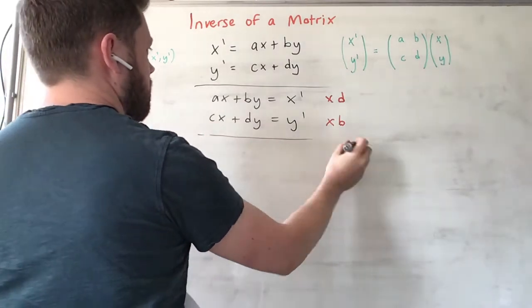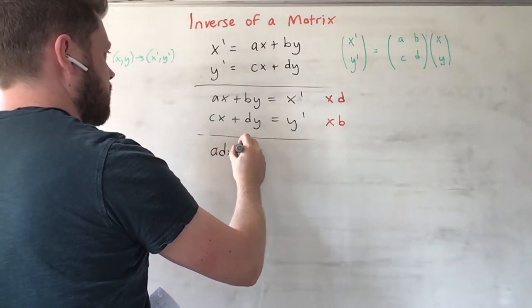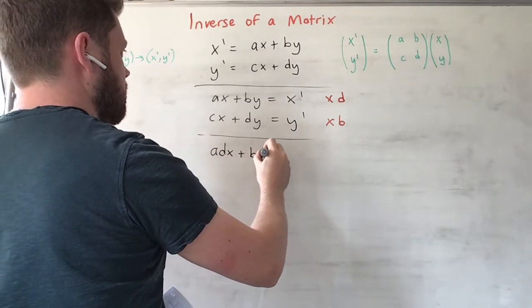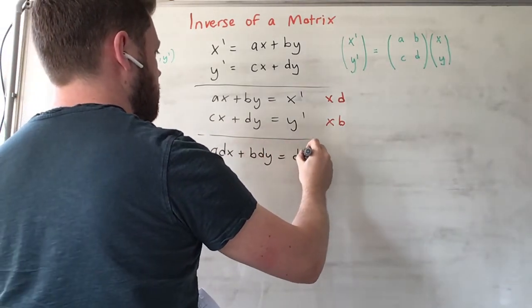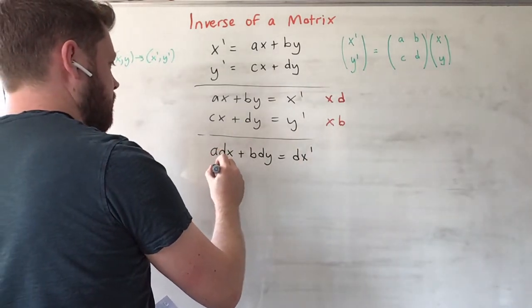So what you get is this is going to give you adx + bdy = dx'.